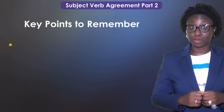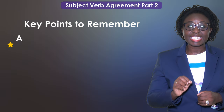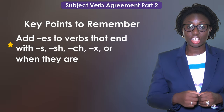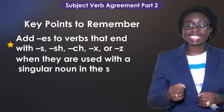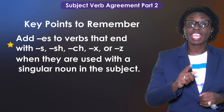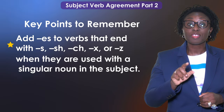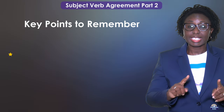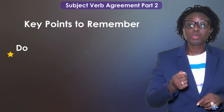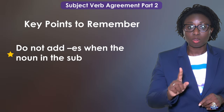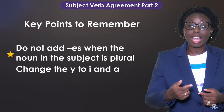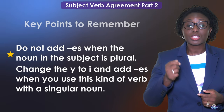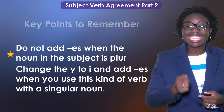Key points to remember: Add ES to verbs that end with S, SH, CH, X, or Z when they are used with a singular noun in the subject. Do not add ES when the noun in the subject is plural. Change the Y to I and add ES when you use this kind of verb with a singular noun.